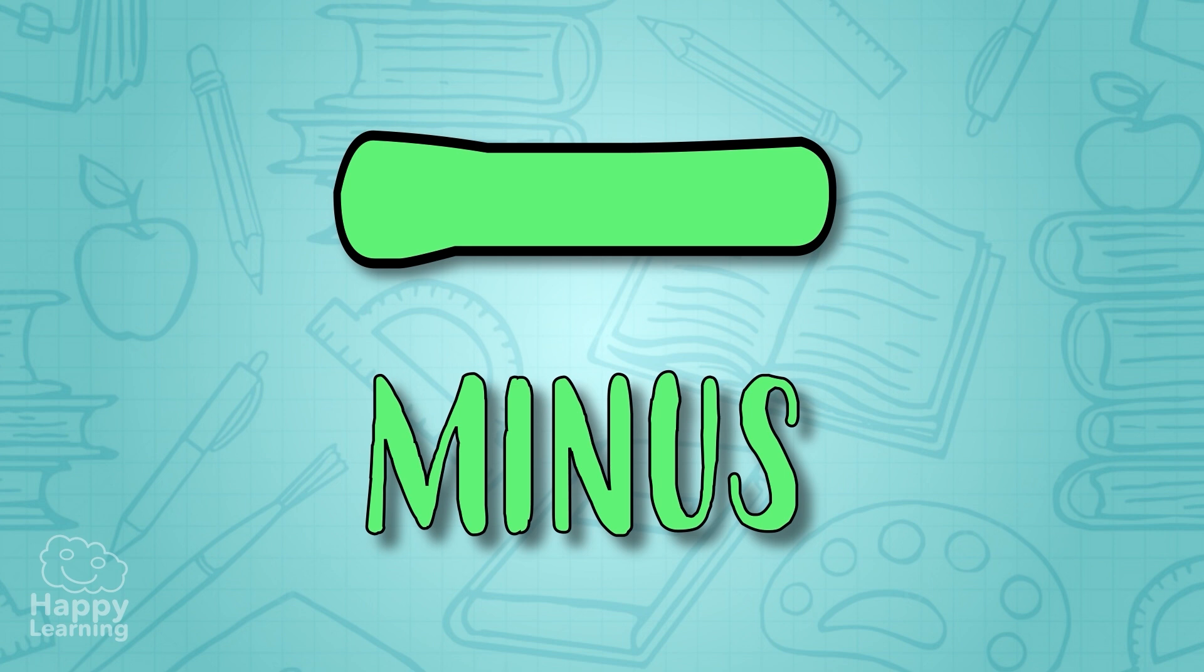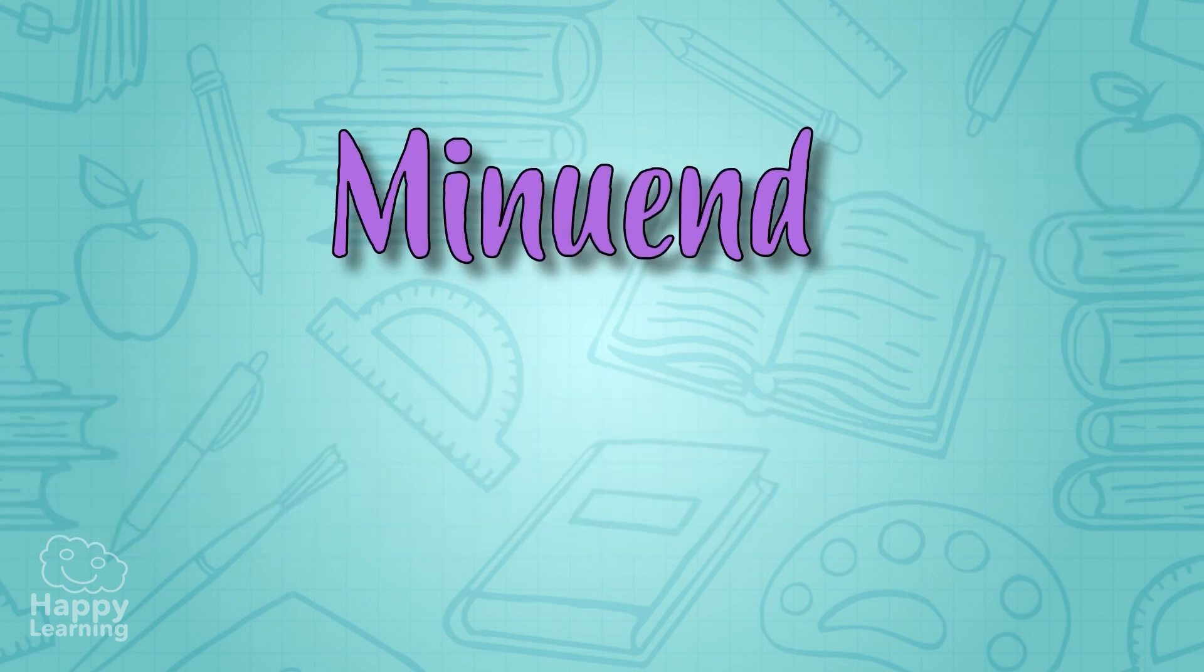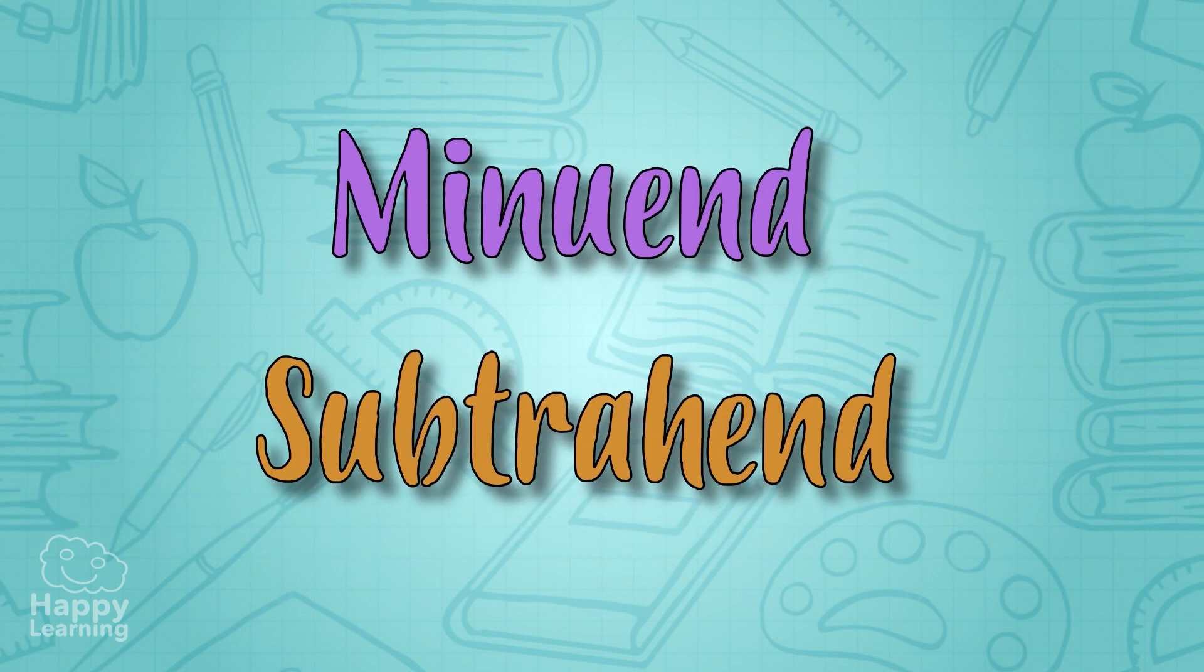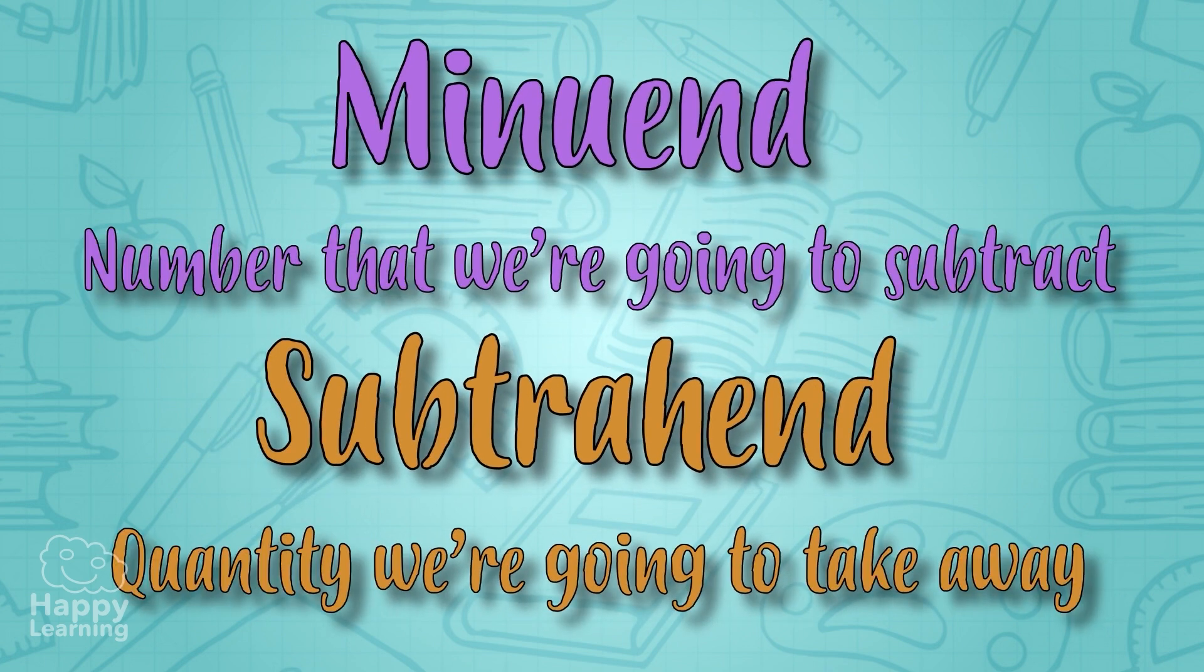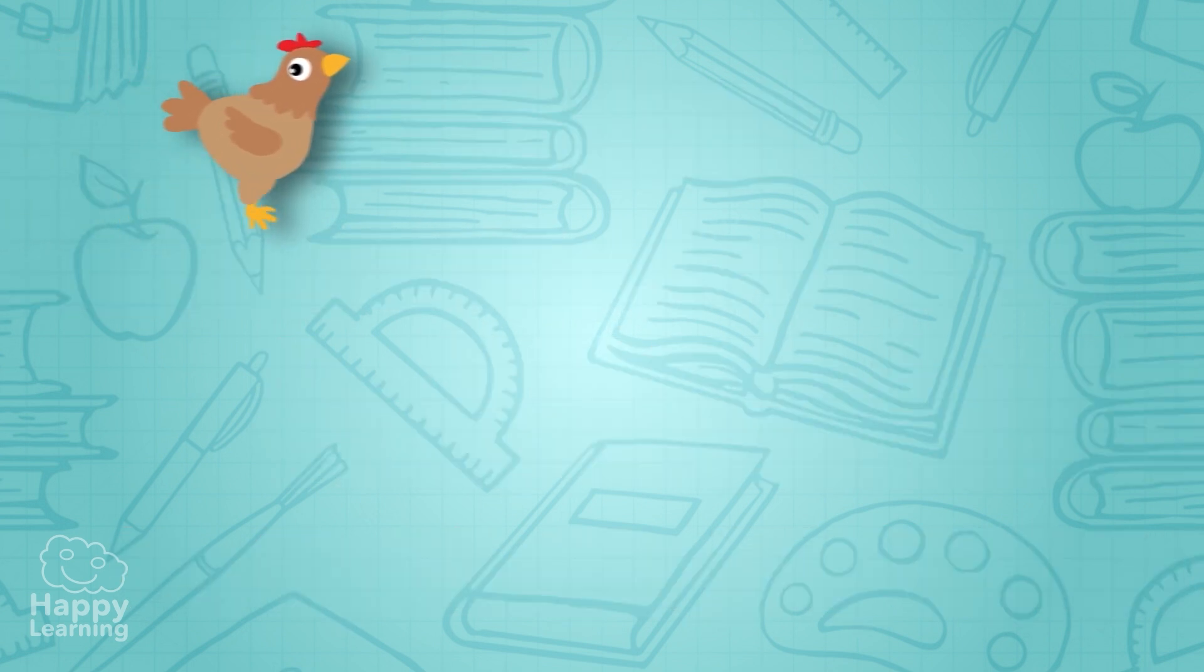Each of the figures that form part of the subtraction are called minuend and subtrahend. The minuend is the number that we're going to subtract from, and the subtrahend is the quantity we're going to take away. For example, if a chicken lays nine eggs but we use six to make an omelette, how many eggs do we have left?